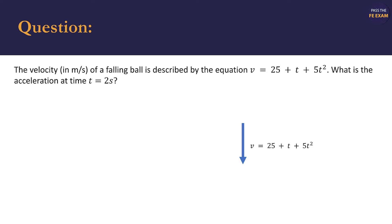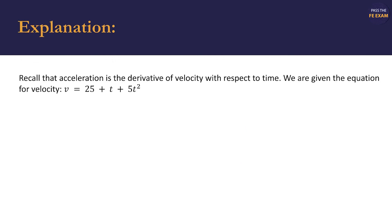In this problem, we're given the ball's velocity equation, and it's a quadratic equation: v equals 25 plus t plus 5t squared. Acceleration is the derivative of velocity with respect to time, and since we're given the equation for velocity, we can find the equation for acceleration.